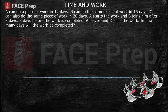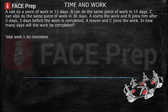Let's try one more example. A can do a piece of work in 12 days, B can do the same piece of work in 15 days, and C can also do the same piece of work in 30 days. A starts the work and B joins him after 3 days. 3 days before the work is completed, A leaves and C joins. In how many days will the work be completed? By the chocolate method, total work is the LCM of 12, 15, and 30, which is 60. So total work is 60 chocolates.